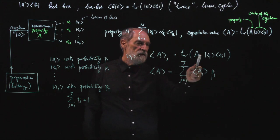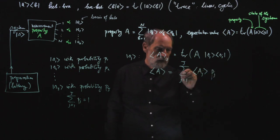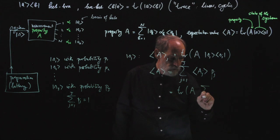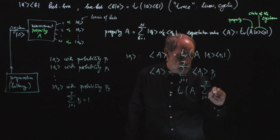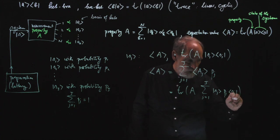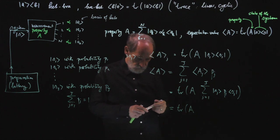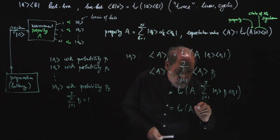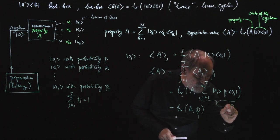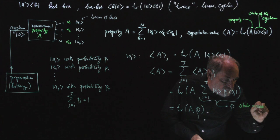This expectation value is a trace, and the trace is linear. So rather than calculating separate traces, multiplying by Pj, and then summing, we can sum first and take the trace later. We then have the trace of A times the sum over j from 1 to J of Pj times ket Sj bra Sj. This sum defines an operator rho, the statistical operator, which describes the state of the system. So the expectation value of A is the trace of A times rho.